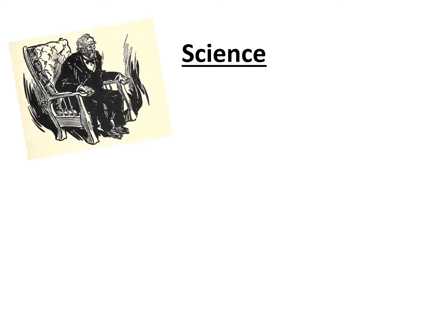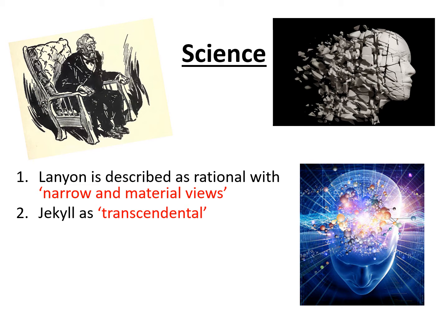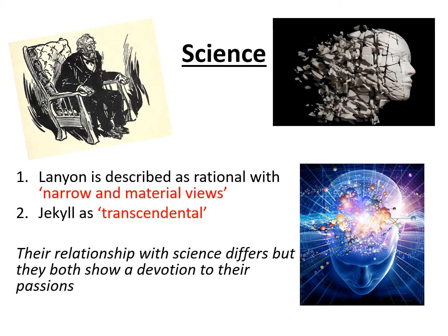Science. It's really a war of two minds in this novella. We've got Lanyon, who's described as rational with narrow and material views, and we've got Jekyll, who's much more aware of the transcendental — this idea of the almost mystical or supernatural. At the heart of understanding this theme, we have to understand their relationships with science, because each of them has a totally opposing attitude to it. But their devotion and fascination with science is at the heart of how we understand the plot as it unfolds.